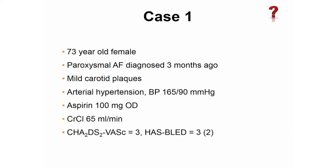Now the same patient in a second scenario. This lady has arterial hypertension and a blood pressure of 165 over 90. The rest is identical. The HAS-BLED score is 3. Who would start anticoagulation with a CHADS-VASc of 3? The reason for her HAS-BLED score of 3 is uncontrolled arterial hypertension. If we control hypertension, it's no longer a bleeding risk factor, which brings her HAS-BLED score down to 1 after stopping aspirin.